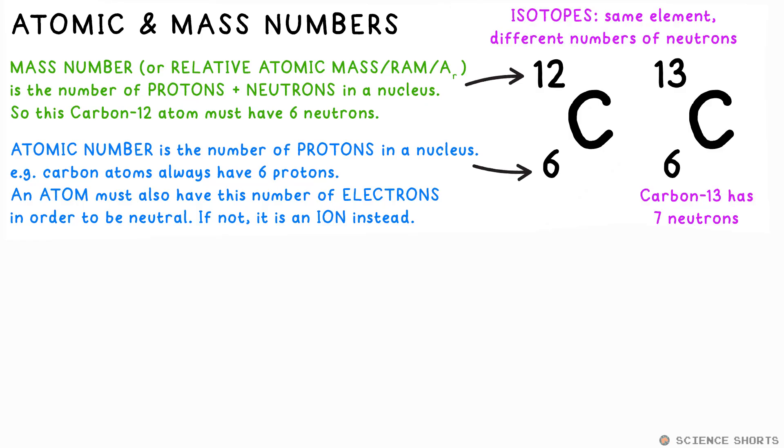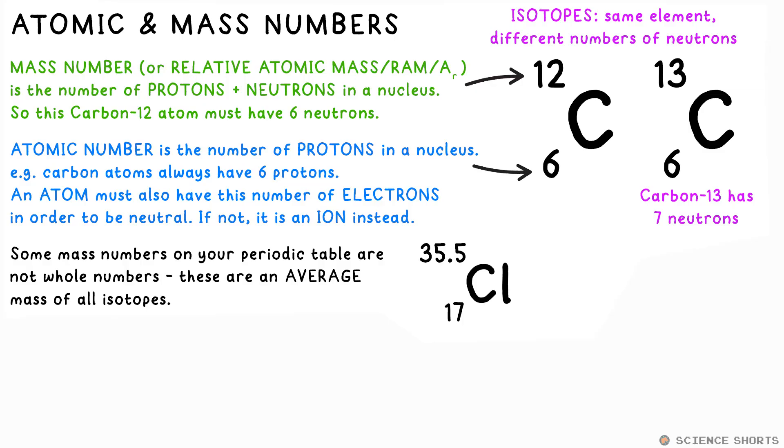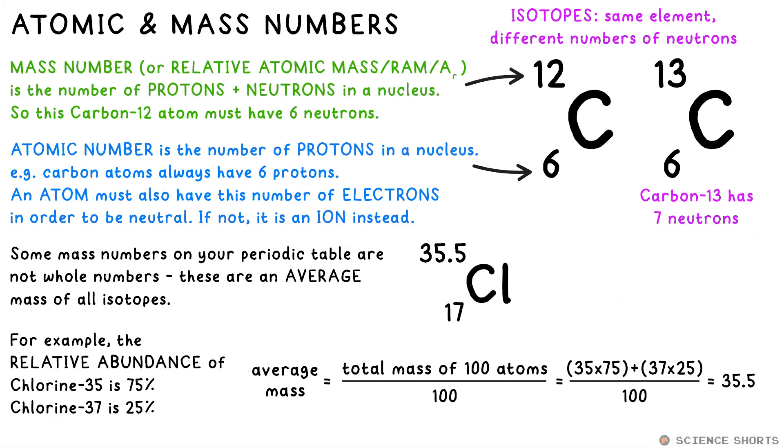However, you can get a carbon atom with seven neutrons instead, so its relative mass is 13. These are what we call isotopes. Atoms of the same element, but with different numbers of neutrons. You might see a mass number that isn't a whole number. This is because periodic tables sometimes show the average mass for all of the isotopes of that element found in the world. For example, if you have some chlorine gas, it turns out that 75% of the atoms will have a mass of 35, while 25% of the atoms will be 37. This is what we call their relative abundance. To find the average, we just pretend that we have 100 atoms. We add up the total masses of all the isotopes, then just divide by 100. That's why chlorine's average relative atomic mass is 35.5.